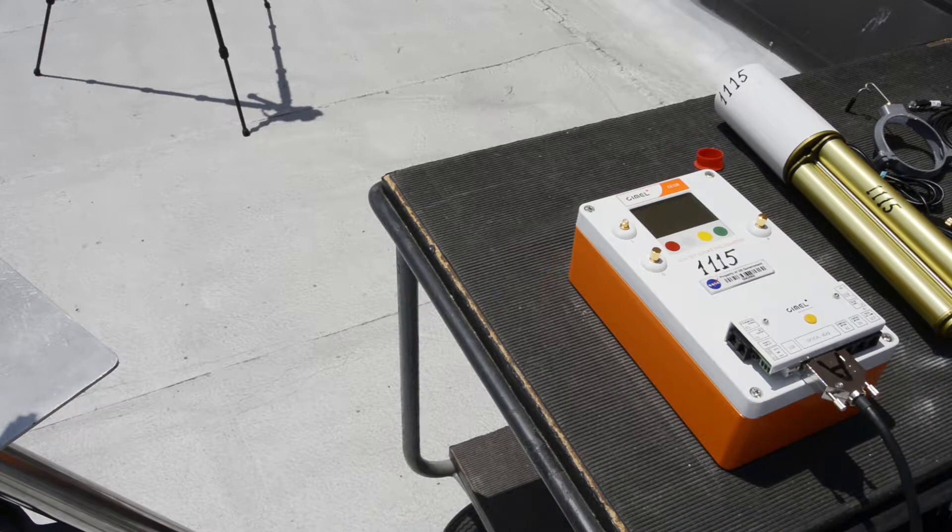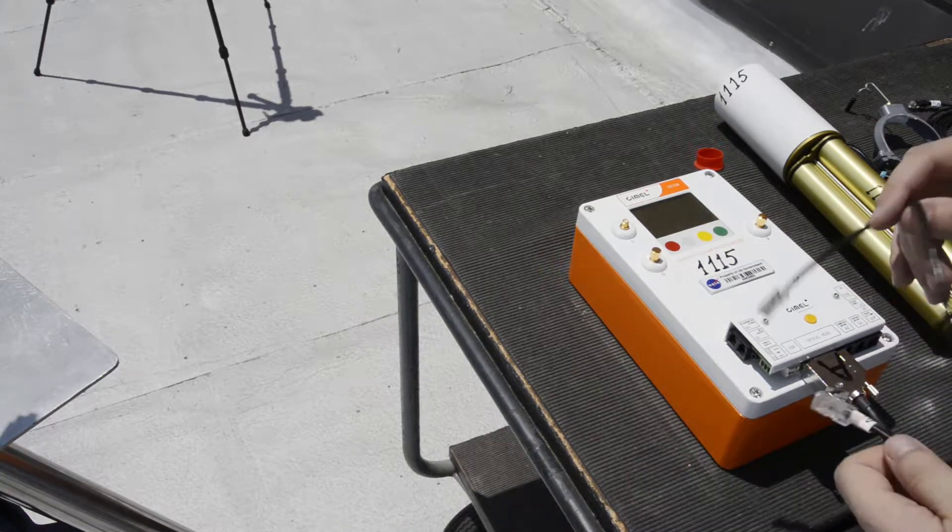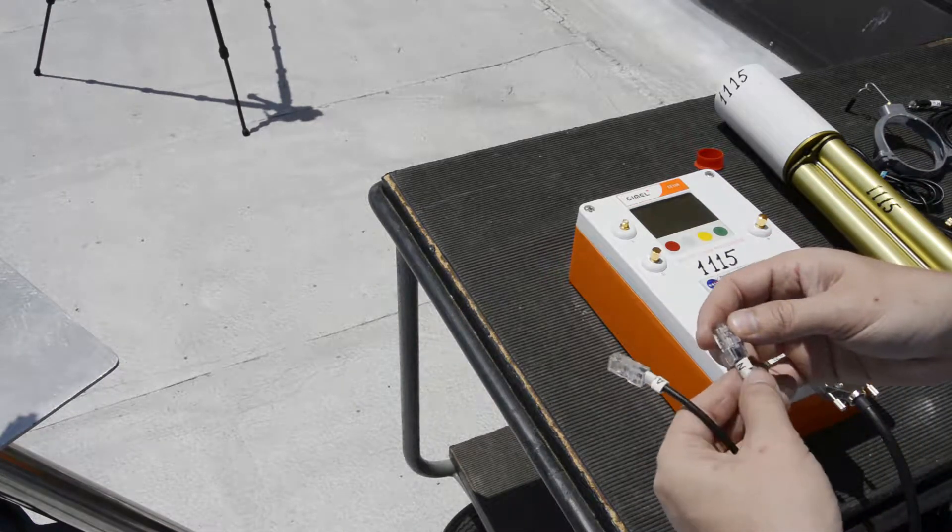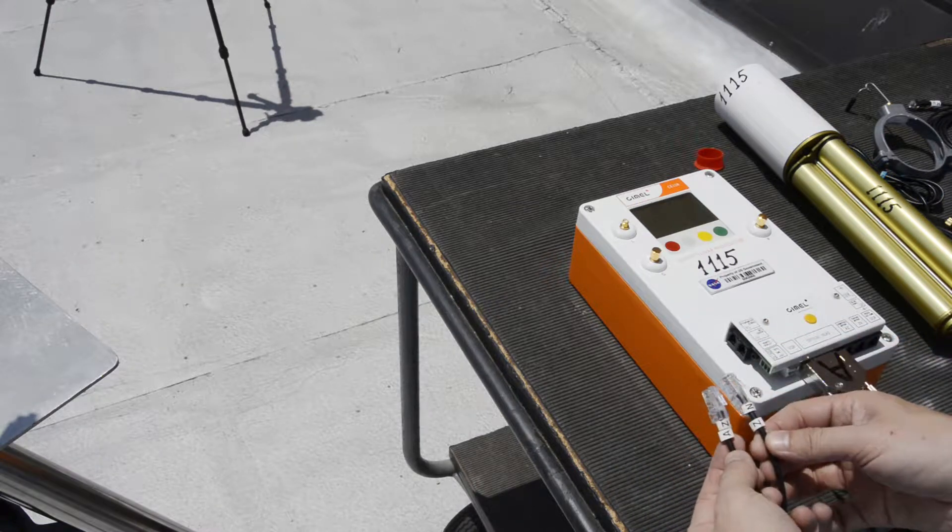The wires from the robot are labeled AZ and ZN for azimuth and zenith. Connect these cables to the connector panel as labeled.